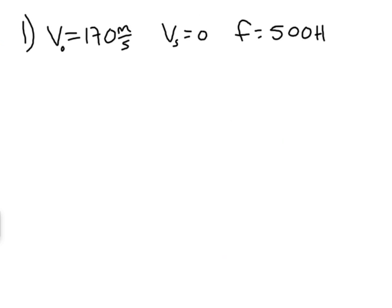Let's crank the numbers. In situation one, we have the observer moving at 170 meters per second. The source is not moving, the emitted frequency is 500 hertz, and we want to find the observed frequency.